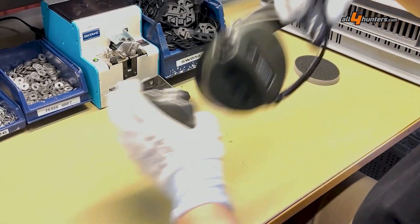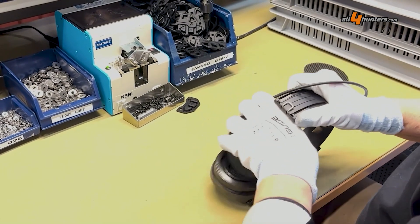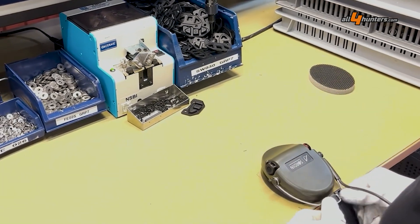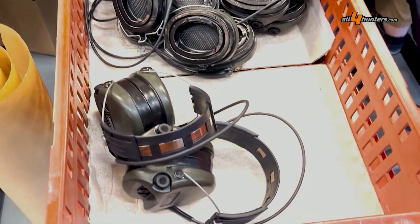Then the headband is attached. And with the exception of the textile cover, which is placed around the band, we have basically a finished ear protector.